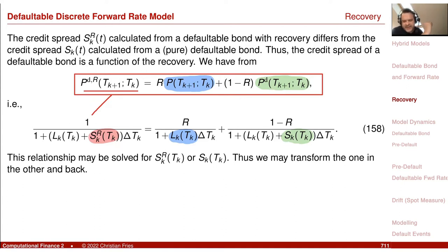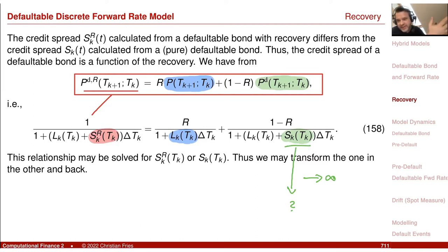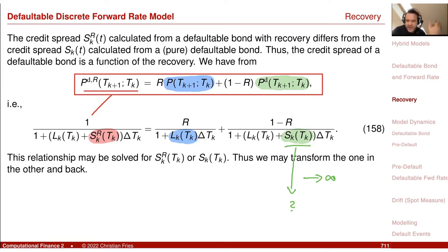An important observation: what happens if the zero-recovery spread goes to infinity? It means 1 divided by (1 plus L plus spread) — the bond value — goes to zero. So the survival probability goes to zero; it is much more likely to default. But if you do that in this equation, this part goes to zero, and you can solve for S_K^R.